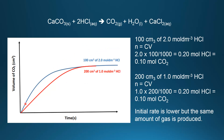In our final graph, the blue curve is 100 cm³ of 2 mol/dm³ hydrochloric acid, and the red curve is 200 cm³ of 1 mol/dm³ hydrochloric acid. Comparing the initial rate: the blue curve has the faster initial rate. Again, that's due to the concentration of the acid — 2 mol/dm³ versus 1 mol/dm³ — so the blue curve has the faster initial rate.